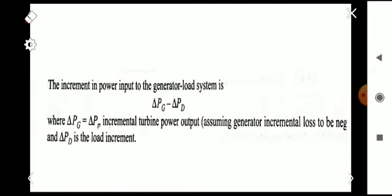In the generator load model, we start with the increment in power input to the generator load system. Assuming an increment in power input, it can be represented as ΔPG minus ΔPD, where ΔPG is treated equal to ΔPT, the incremental turbine output power, and ΔPD is the load increment. Based on the increment in load and turbine output power, the corresponding power input will increase by a particular fraction.